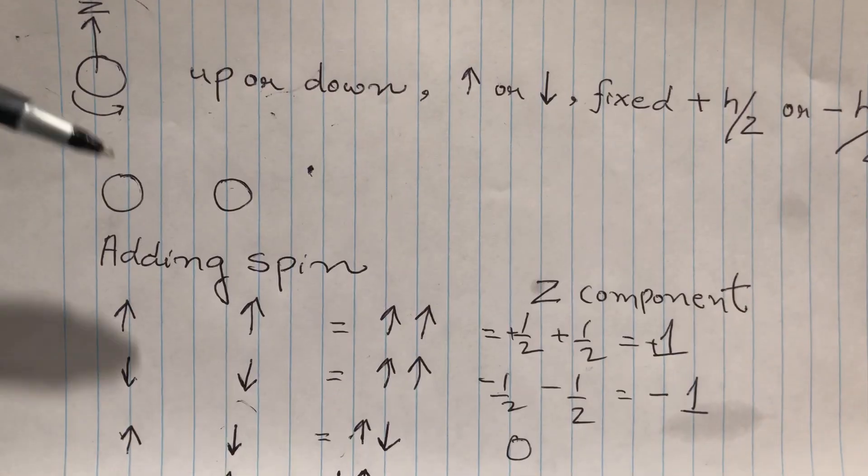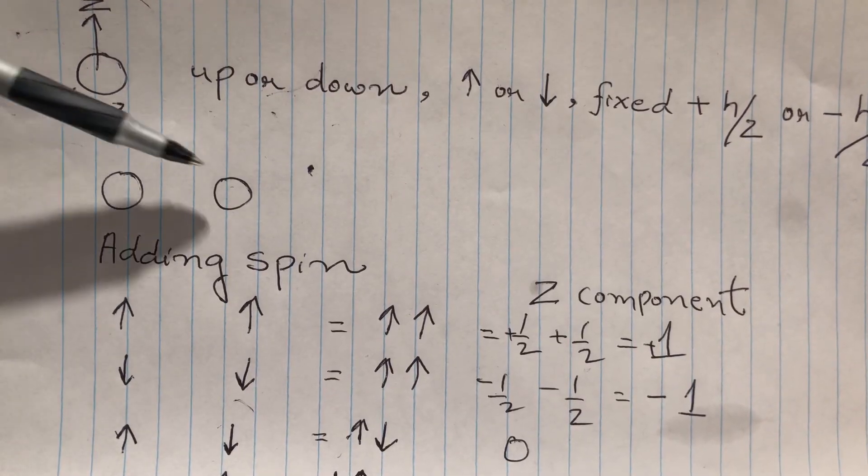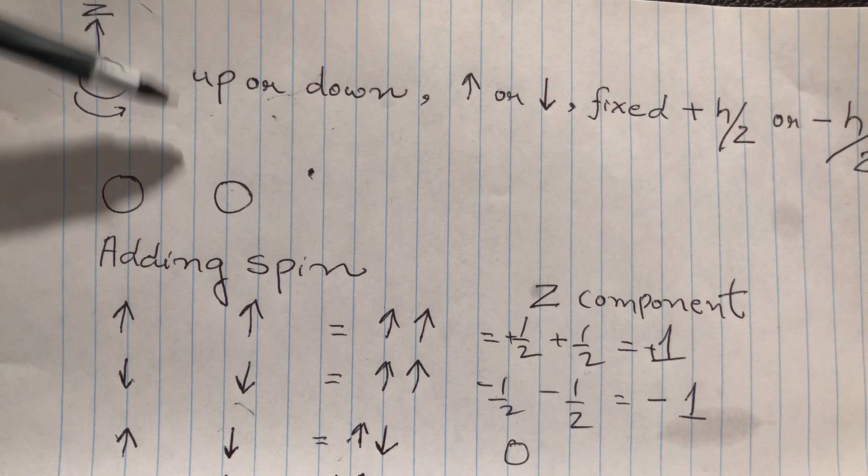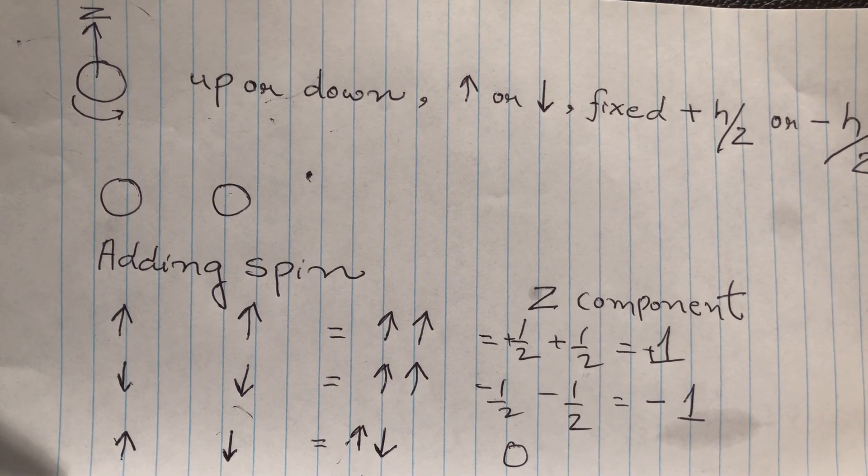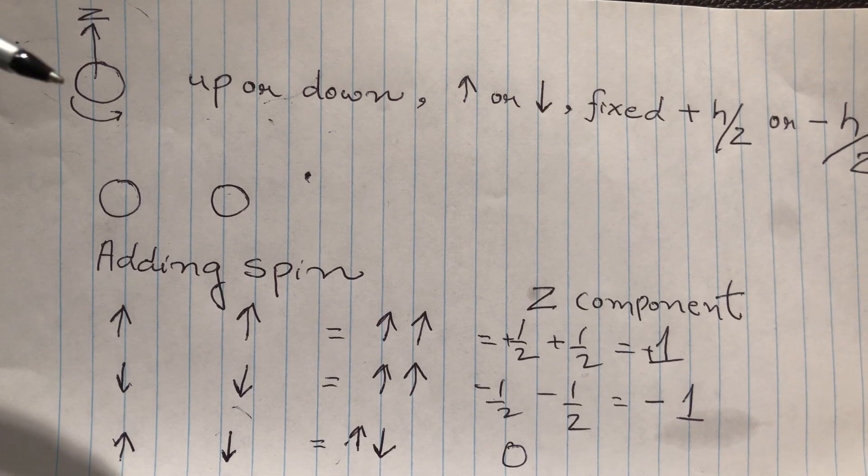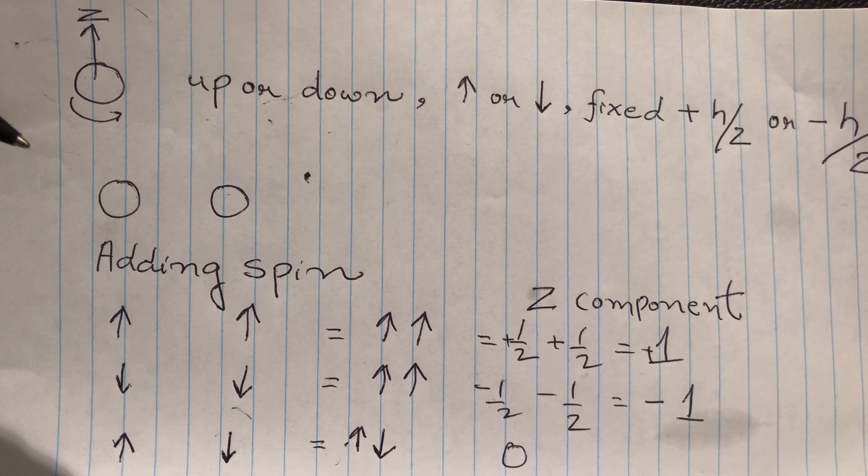Even more interesting will be, how do we add if there are two electrons and we have two spins? Now adding is simple usually, one plus one is two, but that does not happen in quantum mechanics.